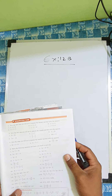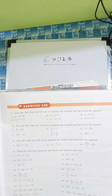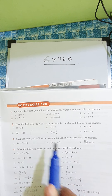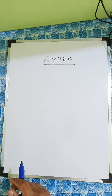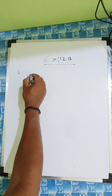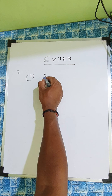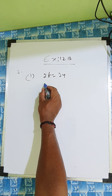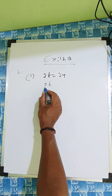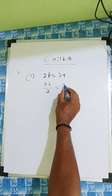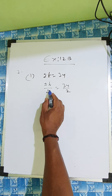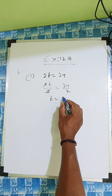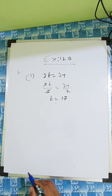Next, question number 2. Give the first step you will use to separate the variable and then solve the equation. See the first question: 2t equal to 34, which means 2 into t equal to 34. If it's multiplication like that, you divide by 2, and here also divide by 2. So 2 cancels, t equal to 34 divided by 2, which is 17.